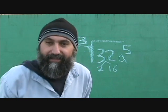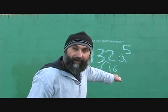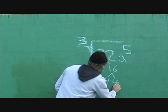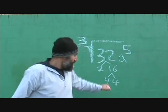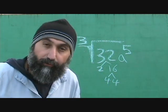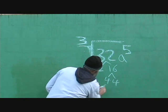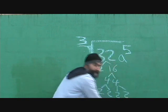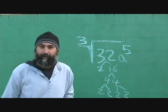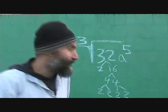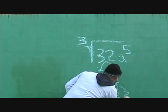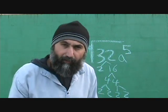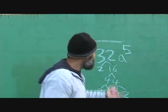We've got two times 16, and then 16 we can break down into four times two. A to the power of five just means five A's multiplied together, so you can just go ahead and list them.